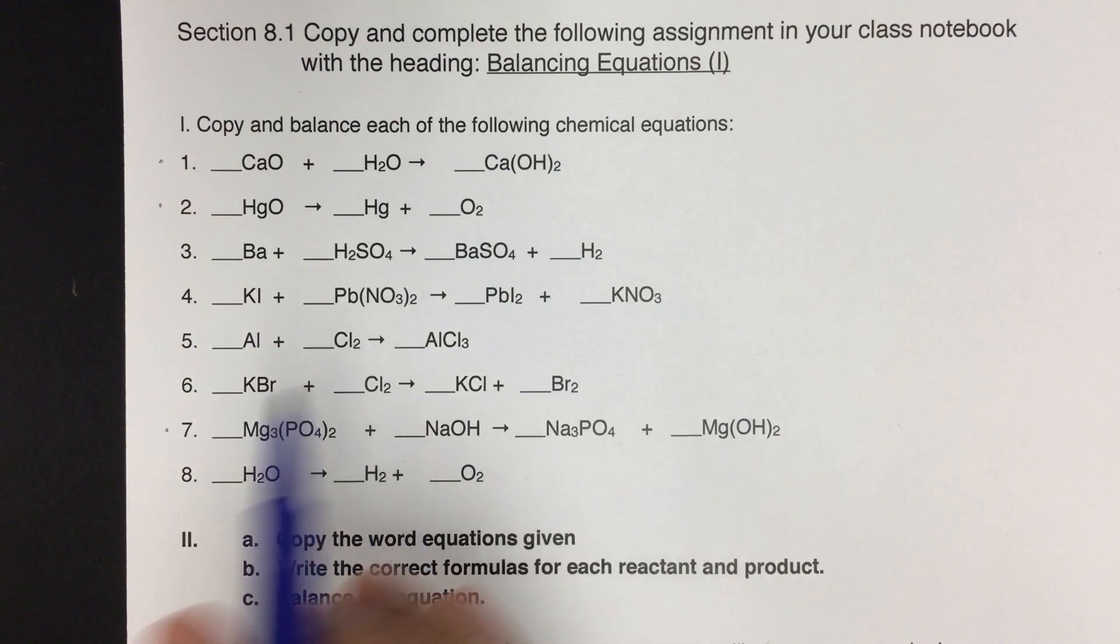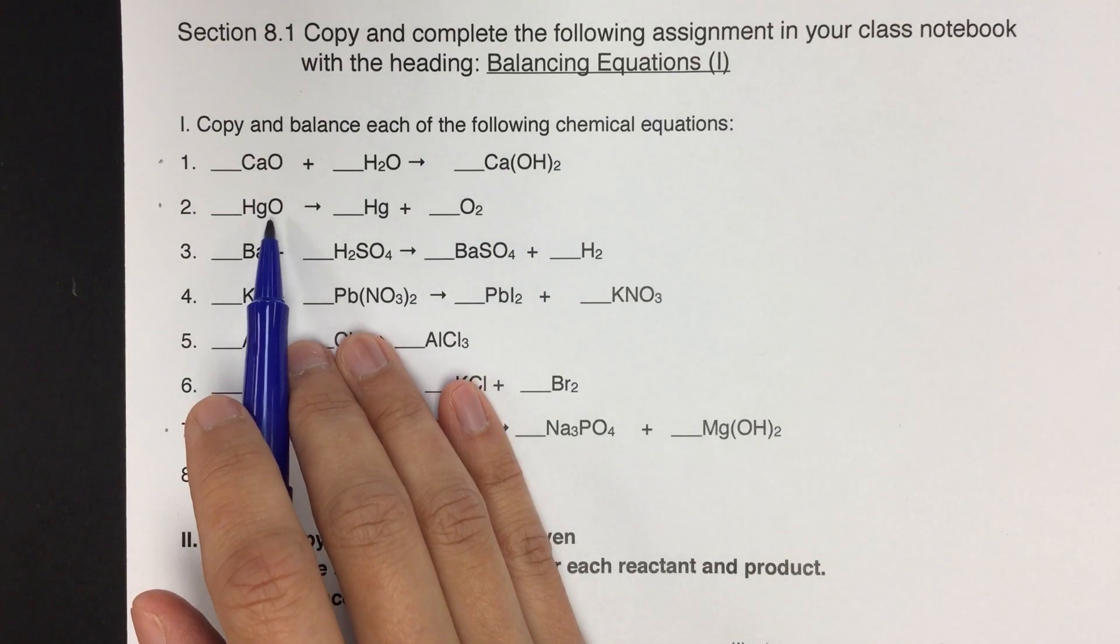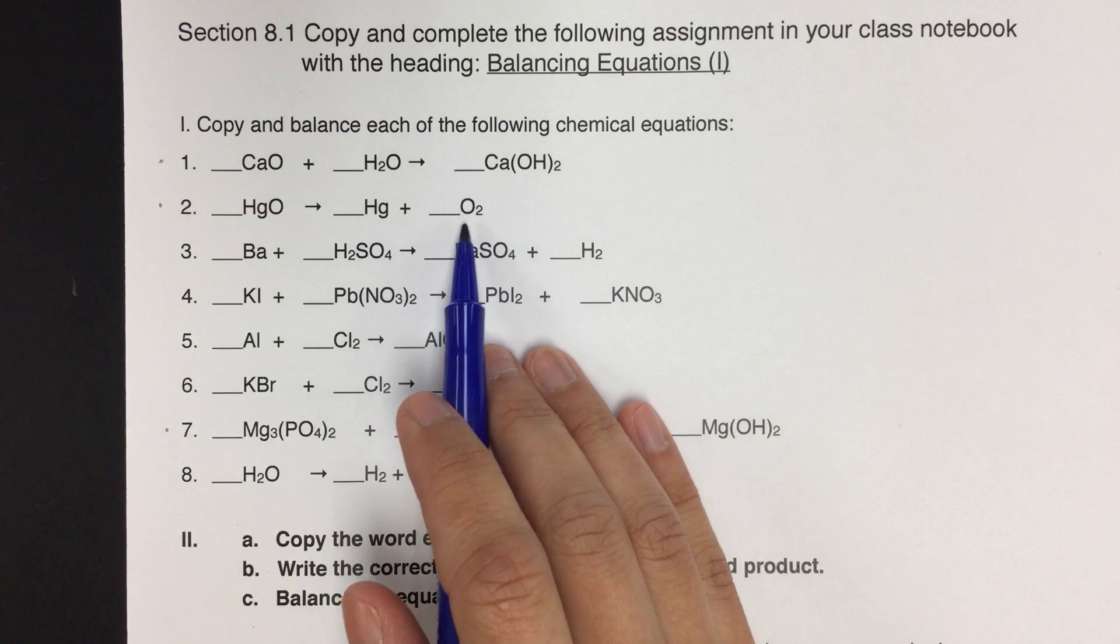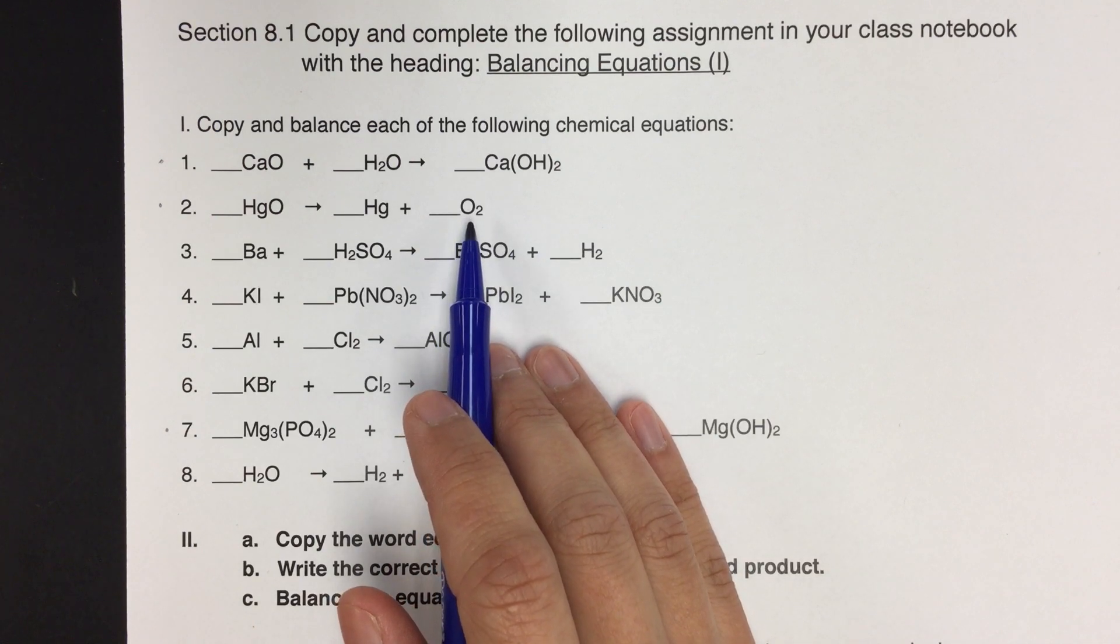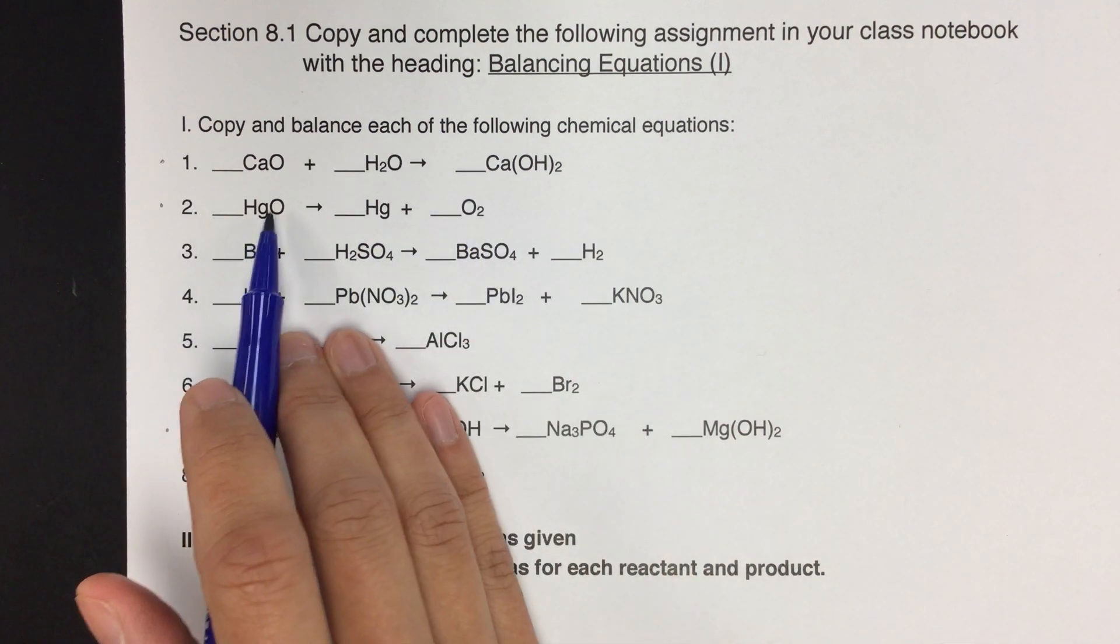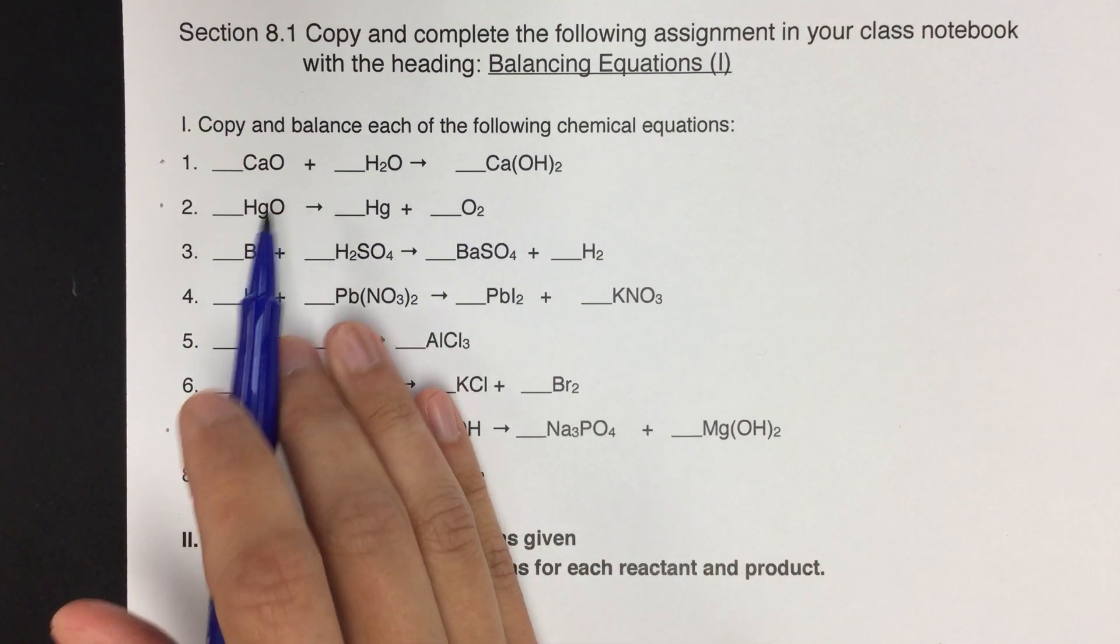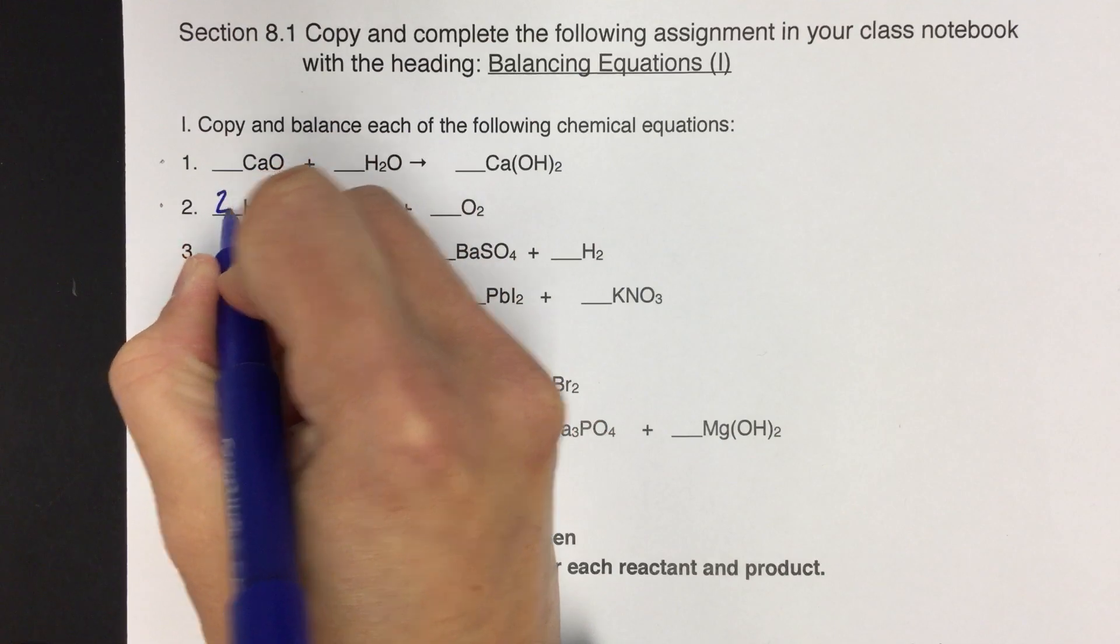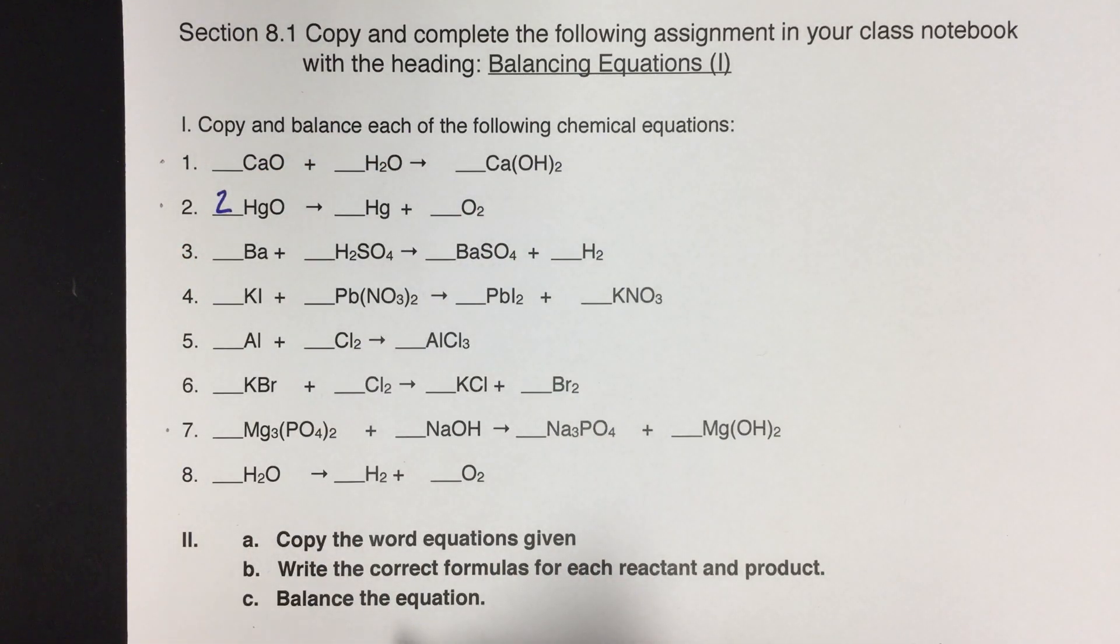If we switch our focus to oxygen, we have one oxygen on the left side. We have two oxygens on the right side. So now we're going to have to do some adjusting. So since there are two on this side, we need to make sure that it balances on this side by changing this to a two. We can't change the formula. We have to just change the amount that we have of HgO. Okay? So we can't change the formula to HgO2.